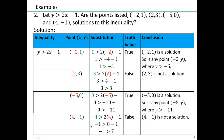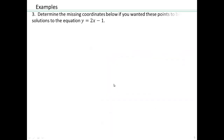For (4, negative 1): we get negative 1 bigger than 7, which is a false statement. So (4, negative 1) is not a solution. All right, let's take a look at what happens if we give you the equation y equals 2x minus 1 and we only give you one of the coordinates — can you find the missing coordinate? Let's try these problems.